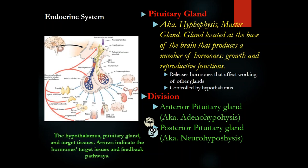The posterior pituitary gland — neurohypophysis — has two hormones: oxytocin and ADH. Oxytocin has two target organs: the uterus — causing uterine contraction — and the breast — causing ejection of milk. ADH, the antidiuretic hormone, retains fluids in the kidney.